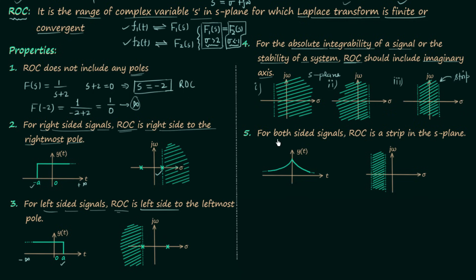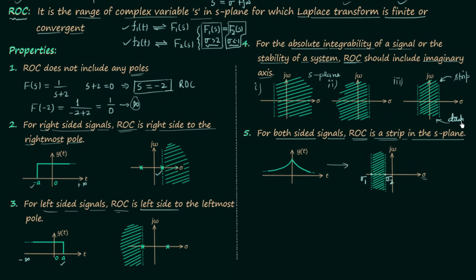The fifth property states: for both-sided signals, the ROC is a strip in the s-plane. For a both-sided signal the region of convergence exists between two values, sigma1 and sigma2, forming a vertical strip. Note that the strip-shaped ROC seen in case three of the fourth property also implies the corresponding signal is double-sided.